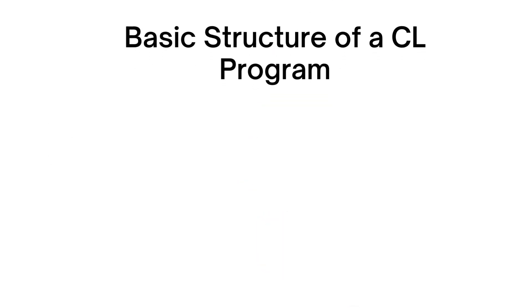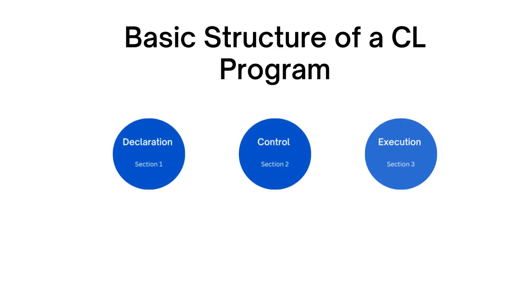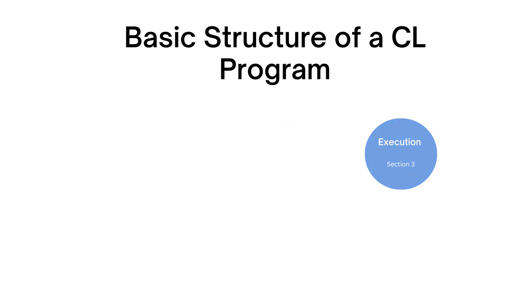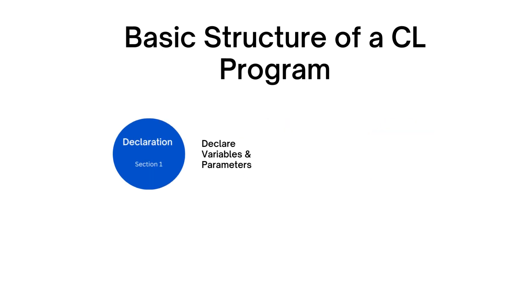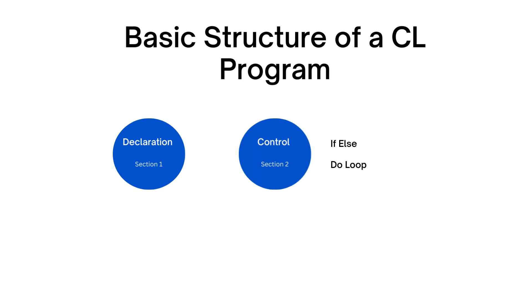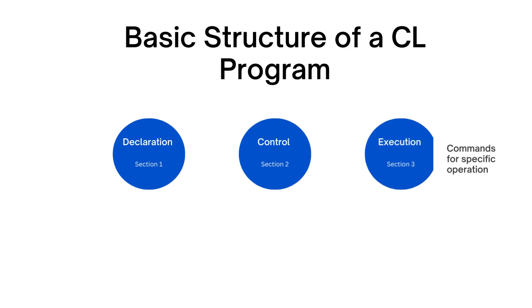Now, let's take a look at the basic structure of a CL program. A CL program consists of different sections: the declaration section, the control section, and the execution section. In the declaration section, you define any variables or parameters your program will use. The control section contains control statements like IFs and DO loops, which dictate the flow of execution. Finally, in the execution section, you write the actual commands that perform specific operations.